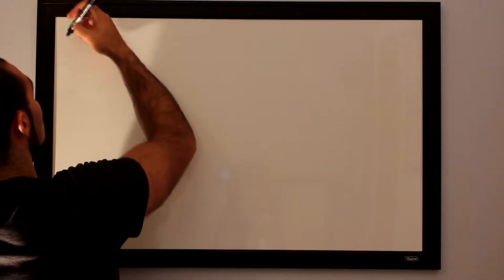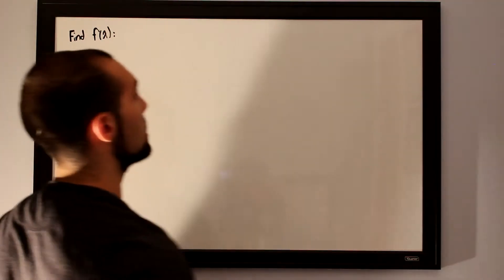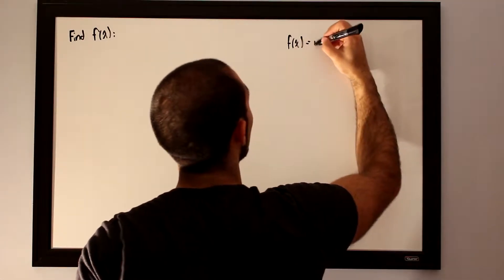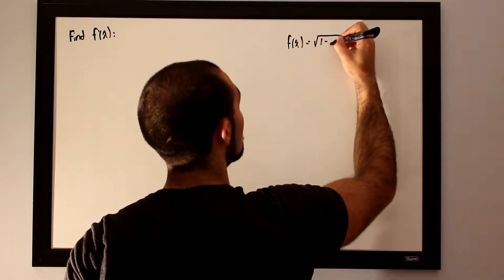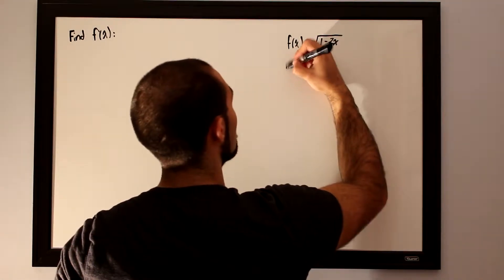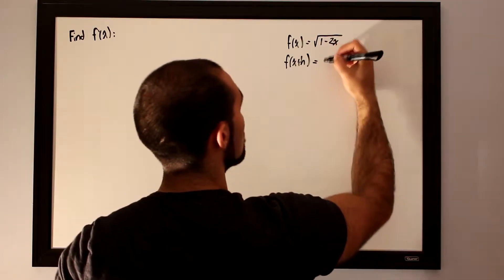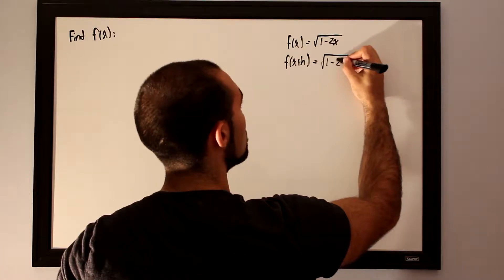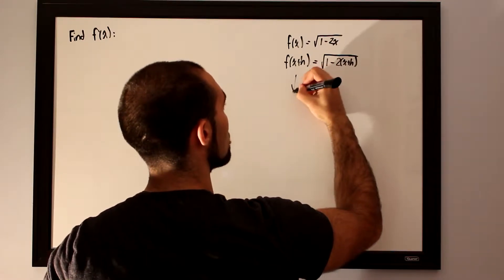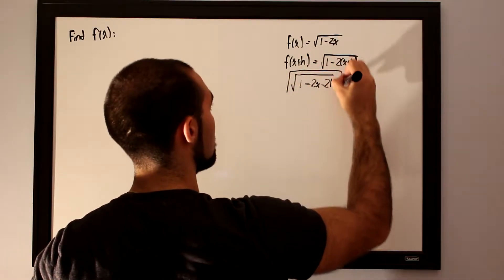We want to find the derivative of the following function: find f prime of x when f of x equals the square root of 1 minus 2x. First, let's determine f of x plus h — substitute x plus h wherever we see x, giving the square root of 1 minus 2 times x plus h. Simplifying, we get the square root of 1 minus 2x minus 2h, and this is our f of x plus h.